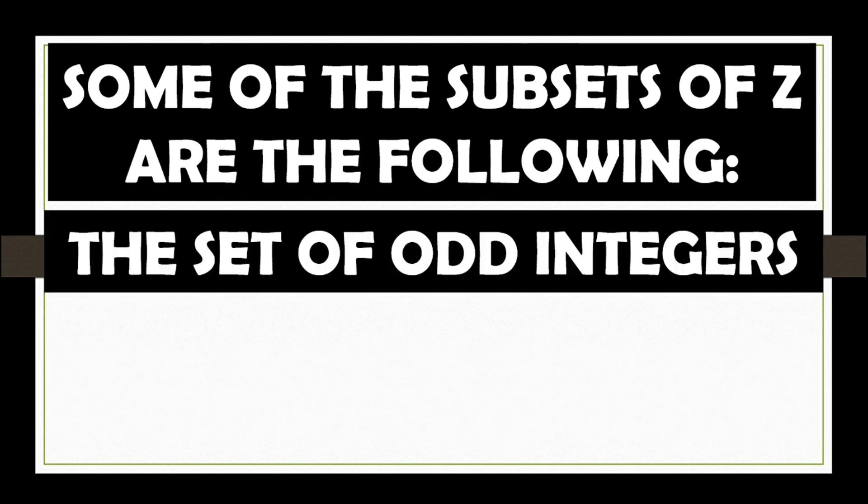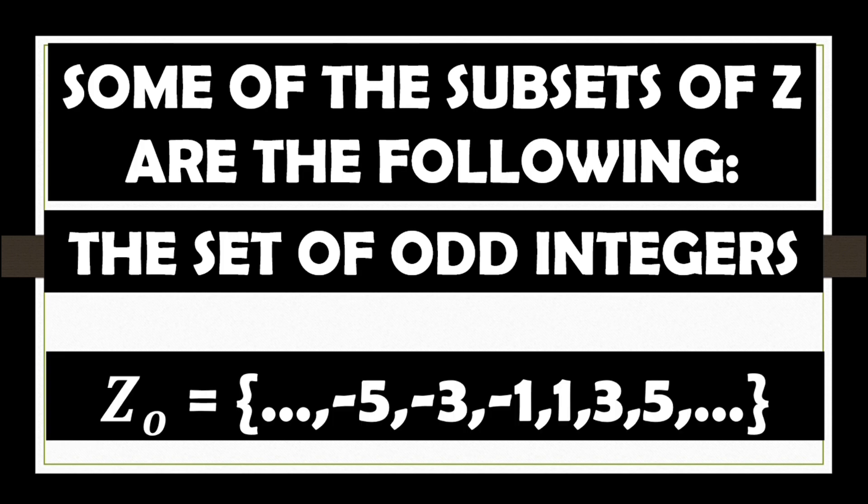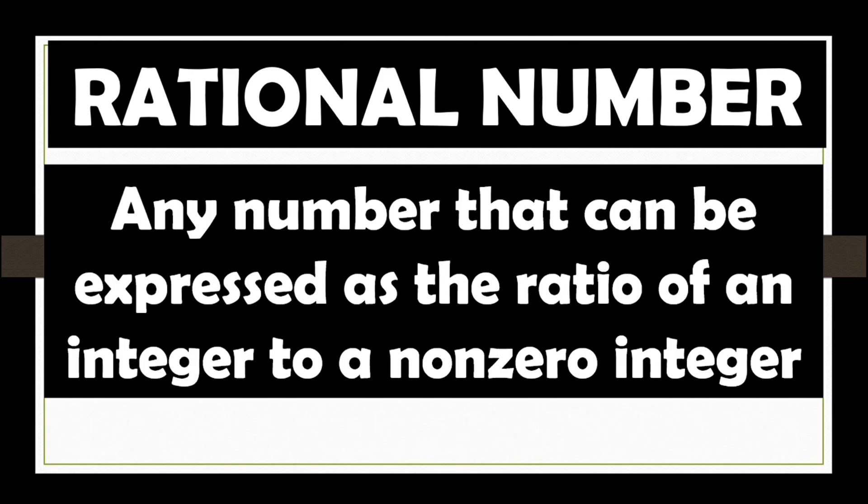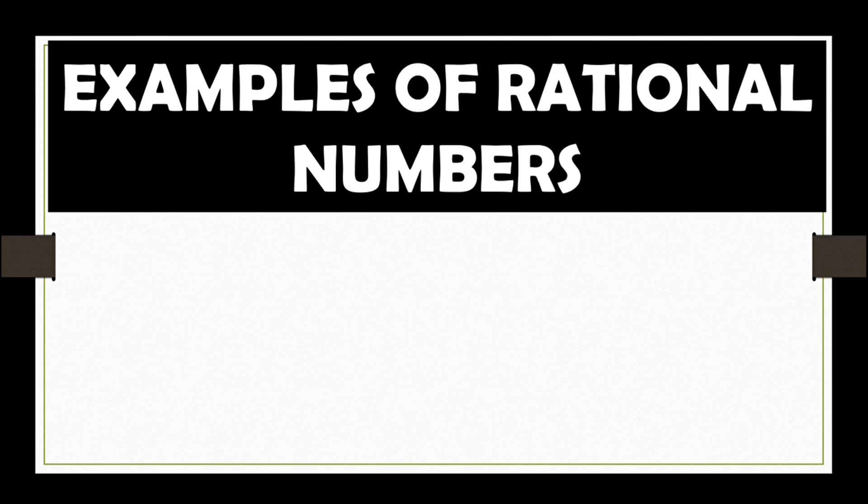The set of odd integers consists of ellipses, negative 5, negative 3, negative 1, 1, 3, 5 ellipses. Let's also define rational number. The set of rational number Q is a set such that Q equals M over N where M and N are integers and N is not equal to 0. Any number that can be expressed as the ratio of an integer to a non-zero integer. These are the examples of rational numbers.